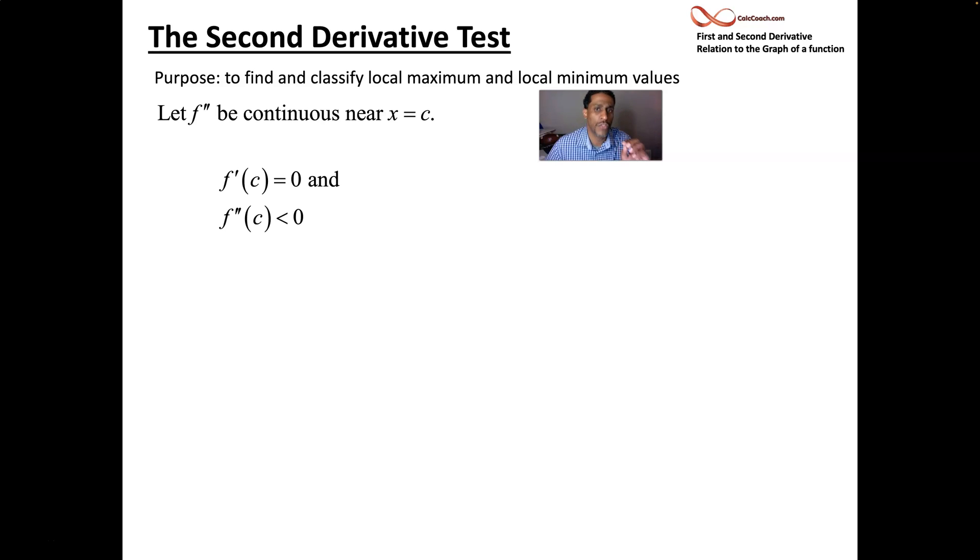So you got a place where your first derivative is equal to zero. Then you go plug that value into your second derivative and you check the sign on it. Is it positive or is it negative? You don't care about the value, just the sign.